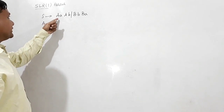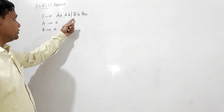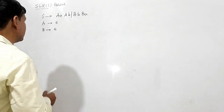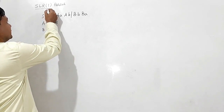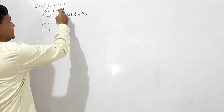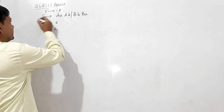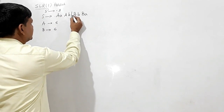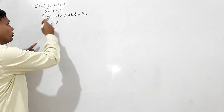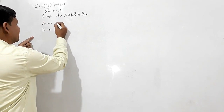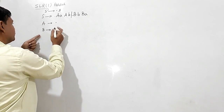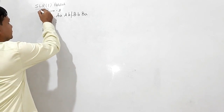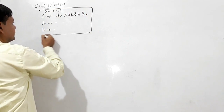Next grammar: S is giving AAB or B, A is giving epsilon, B is also giving epsilon. The augmented production S' → .S. The closure of S gives .AAB or .B. Closure of A gives .epsilon or dot. Closure of B gives .B dot.